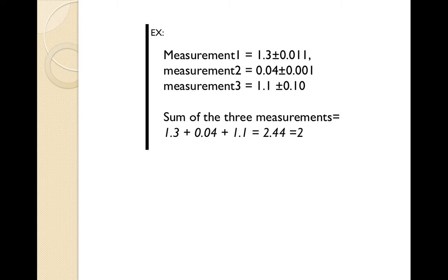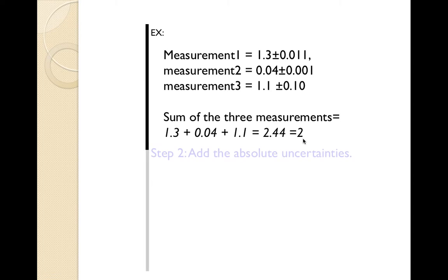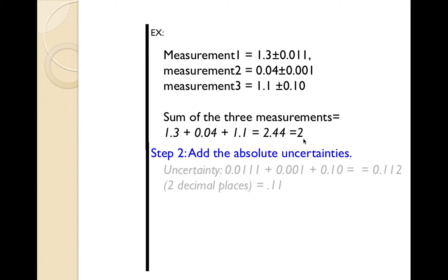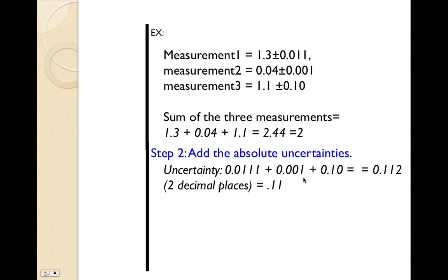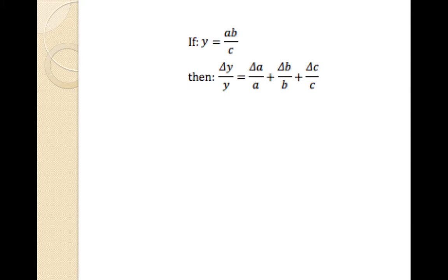Another example — go ahead and pause this and see if you can find the new measurement by adding these together. The sum of the three measurements is 2.44, rounded to one significant figure is 2. Then you add the absolute uncertainties, which gives 0.11 — but it should just be 0.1 because this measurement here is only one significant figure. So your new answer would be 2 plus or minus 0.1.